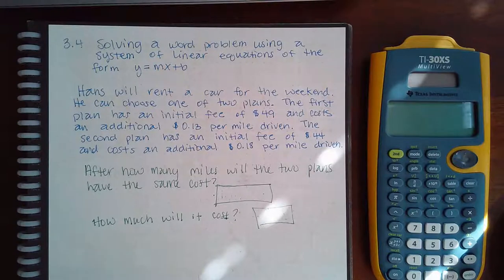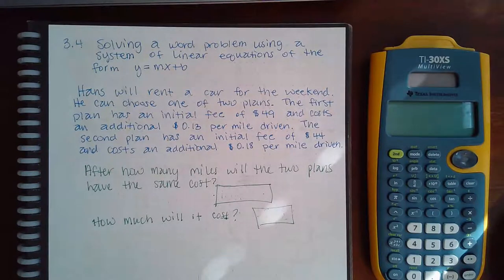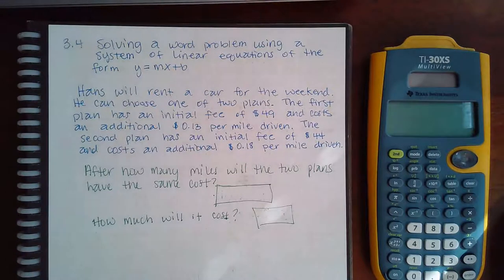So the word problem reads, Hans will rent a car for the weekend. He can choose one of two plans. The first plan has an initial fee of $49 and costs an additional 13 cents per mile driven. The second plan has an initial fee of $44 and costs an additional 18 cents per mile driven. After how many miles will the two plans have the same cost? How much will it cost?